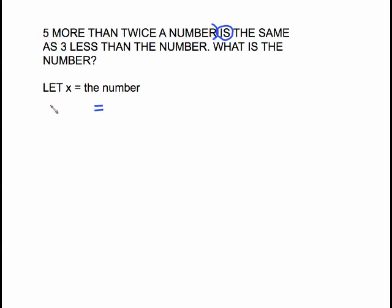Five more than twice a number. Five more than we know is plus. Twice means two times, so that's 2x. So that's all there is to it on the left side.